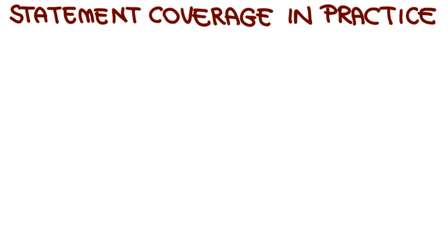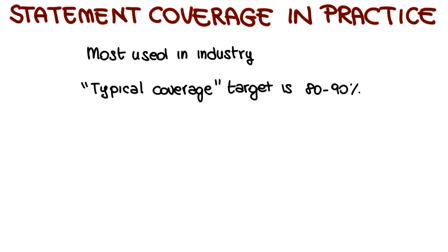Before looking at other kinds of coverage, let's see how statement coverage is used in practice. Statement coverage is the most used kind of coverage criterion in industry. Typically, the coverage target is 80-90%, meaning that 80-90% of statements should be exercised by the end of testing. You may be wondering: why don't we just shoot for 100%? Why don't we try to cover all the code? We just saw that we can do it — so I'm going to ask you the same question.